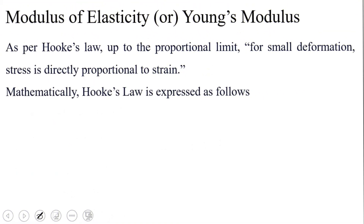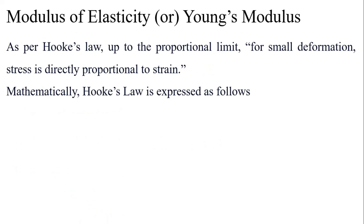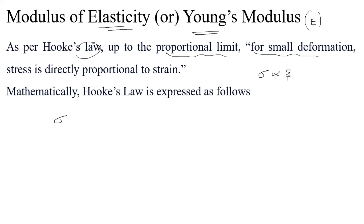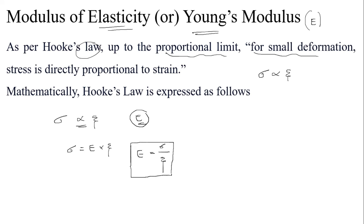Young's modulus, also called modulus of elasticity and denoted by E, is derived from Hooke's law, which states that stress is directly proportional to strain. Mathematically, sigma is directly proportional to strain for small deformation. To remove the proportionality, we introduce Young's modulus, giving the formula: E = sigma / strain, or Young's modulus equals stress divided by strain.